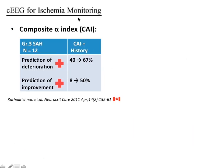A composite alpha index tool was used in 12 patients with grade 3 subarachnoid hemorrhage. Monitoring this index improved the ability to predict clinical deterioration from 40 to 67 percent. This study demonstrated that continuous EEG monitoring with composite alpha index better prognosticates whether patients will improve or deteriorate.